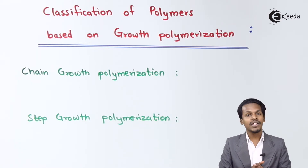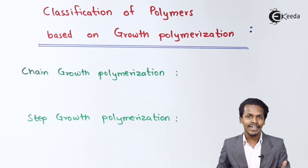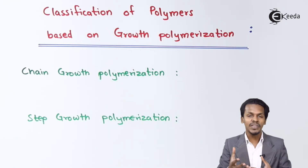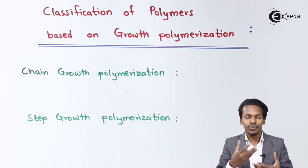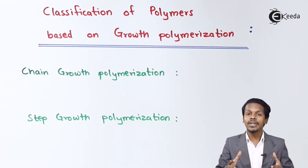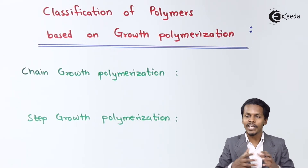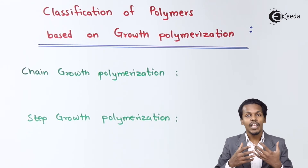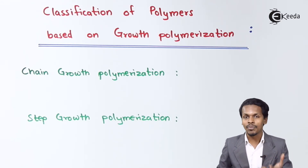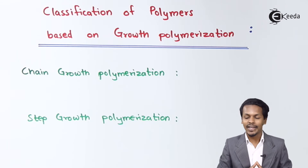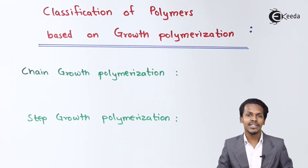In chain growth polymerization, the monomers are alkenes or derivatives of alkenes. When these monomers combine with each other, they form an addition reaction, and this produces a product. If we consider n number of monomers, the polymerization takes place in such a manner that we get an addition polymer. This type of polymer growth is known as chain growth polymerization.